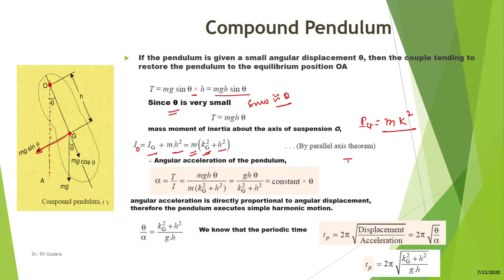Since T = I × alpha, alpha = T/I. With T = mgh·theta and I = m(k² + h²), we get alpha = gh·theta / (k² + h²). Since gh/(k² + h²) is a constant, alpha is directly proportional to theta. Therefore, this compound pendulum also performs simple harmonic motion about its equilibrium position.